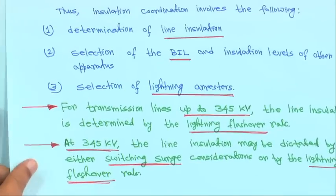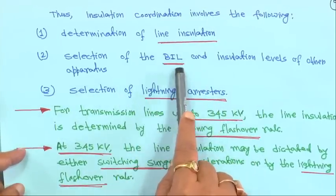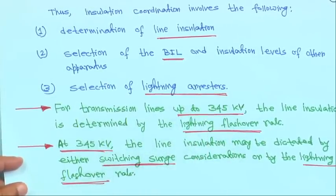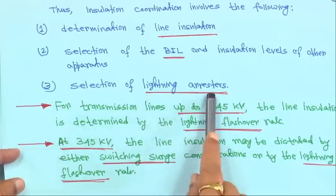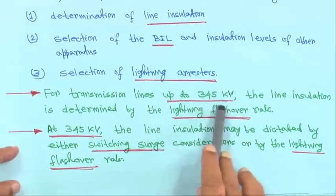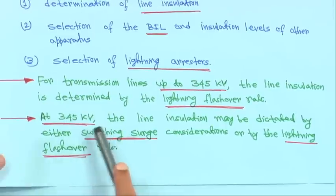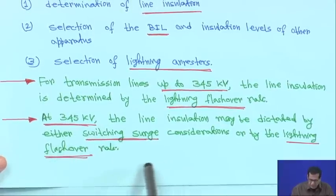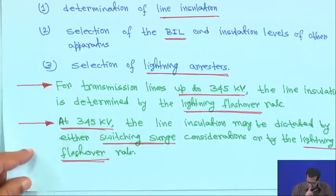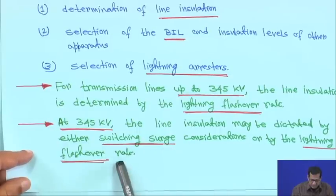Insulation coordination involves: determination of line insulation, selection of the BIL value and insulation levels of apparatus, and selection of lightning arrestors. For transmission lines up to 345 kV, line insulation is determined by lightning flashover rate only. Above 345 kV, the line insulation may be dictated by either switching surge considerations or by the lightning flashover rate.